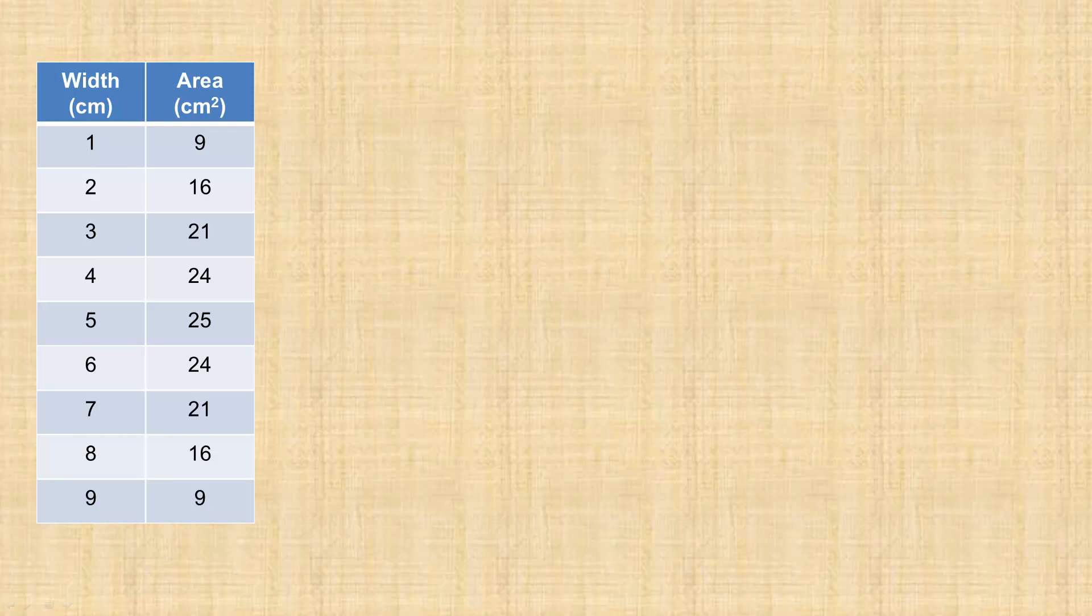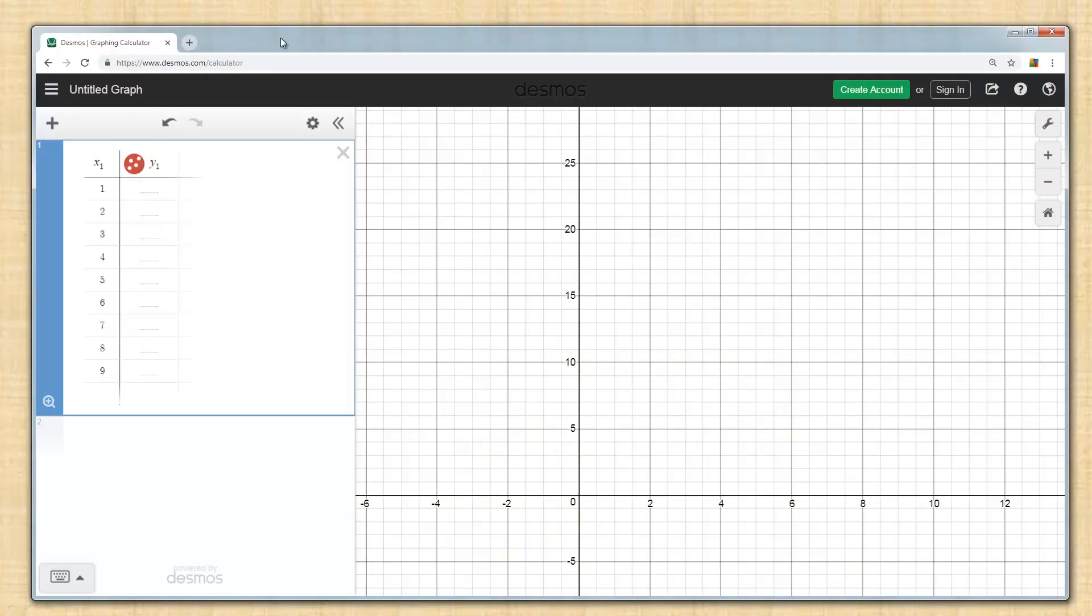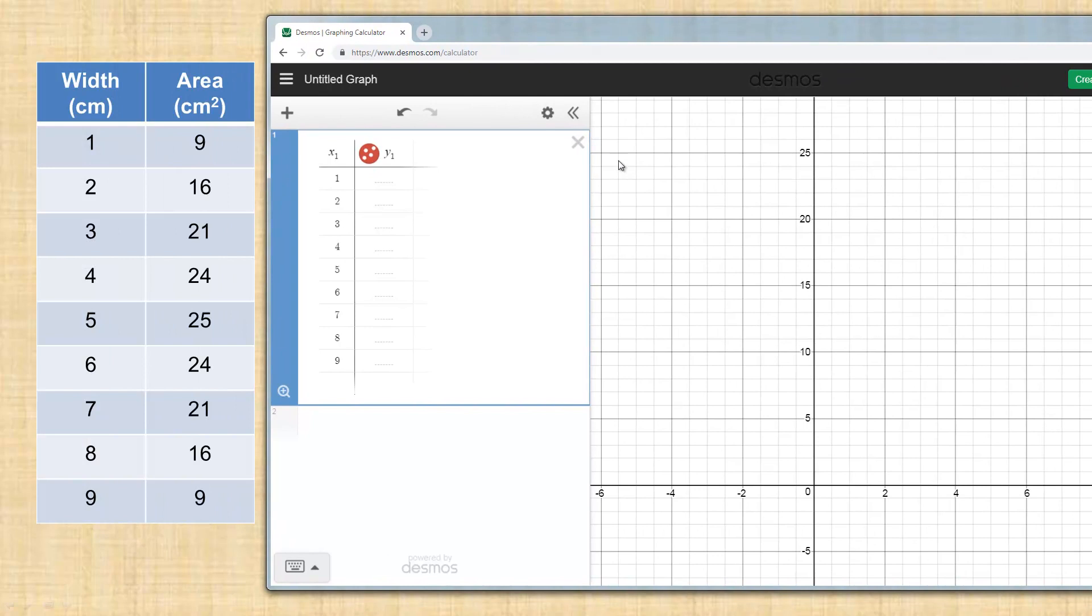What I'm going to do is bring my Desmos graph over here. So here is my 1 to 9 here, and my y values is the area. So I'm going to put 9 in first, and then 16, and then 21—you can see the points coming up on the graph over here—and then 25.